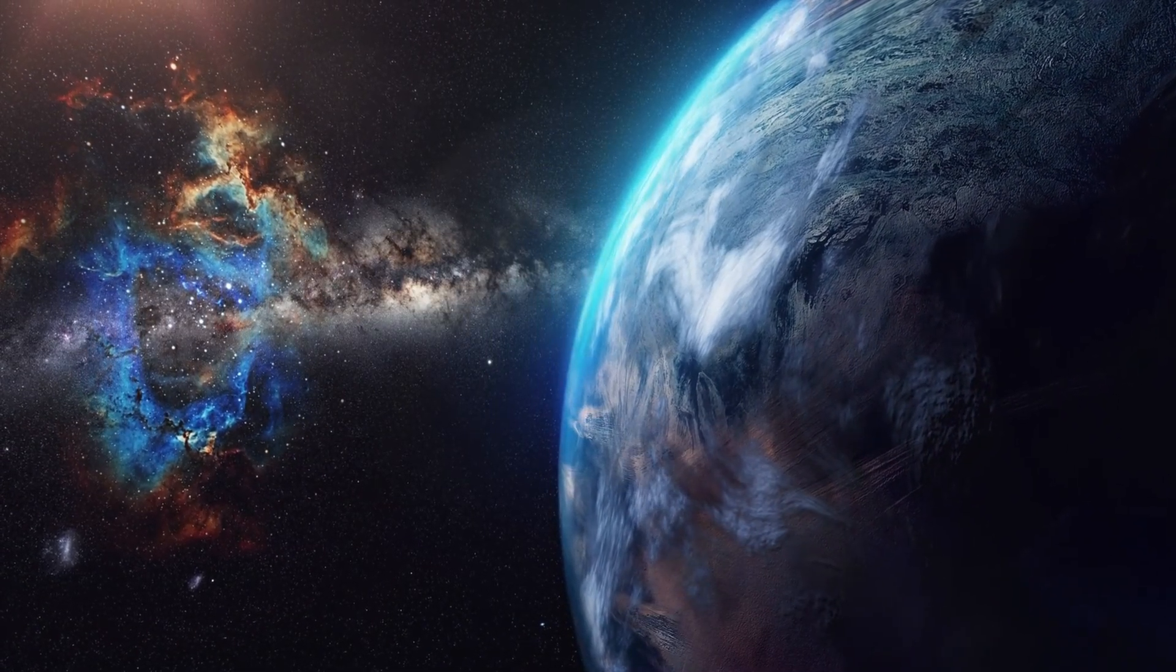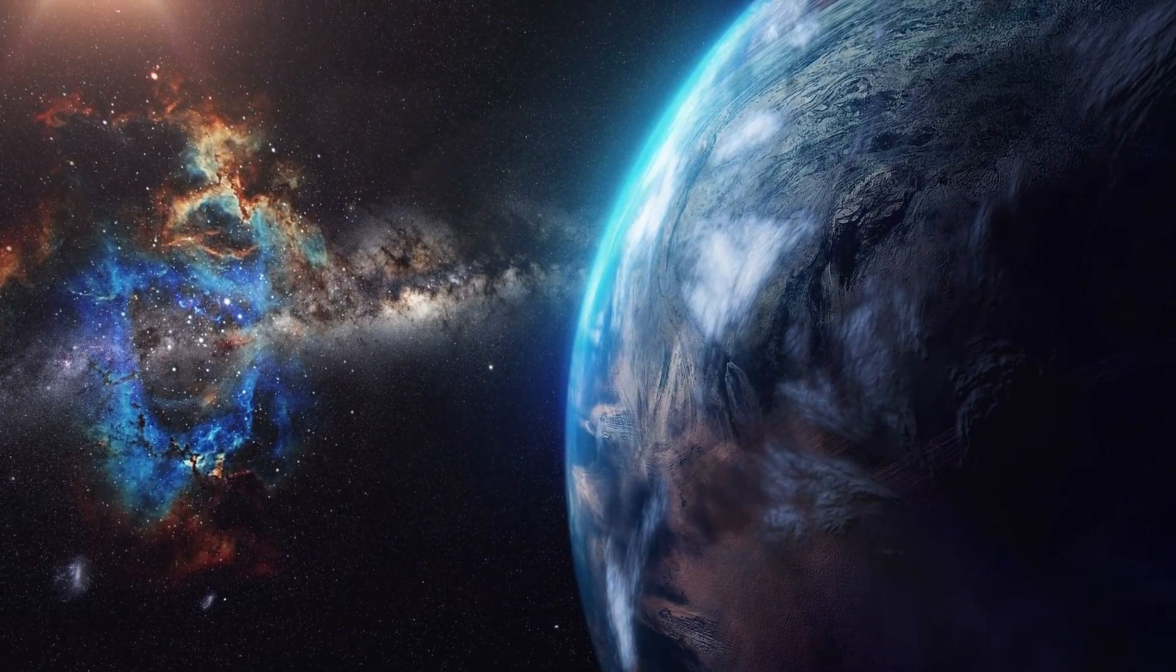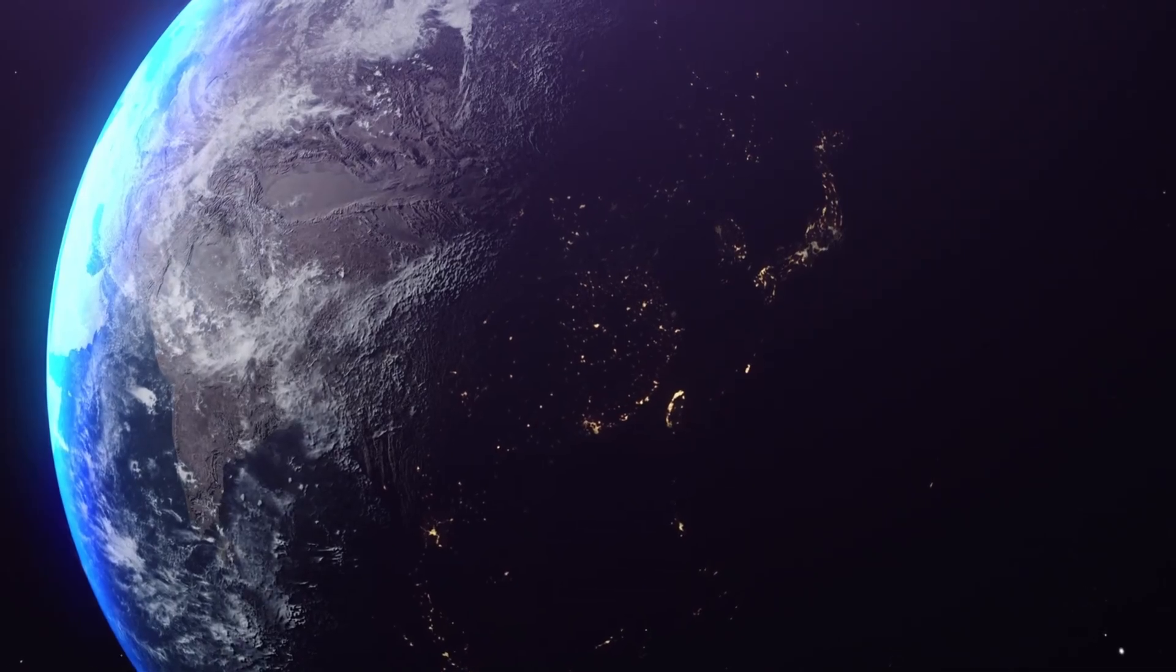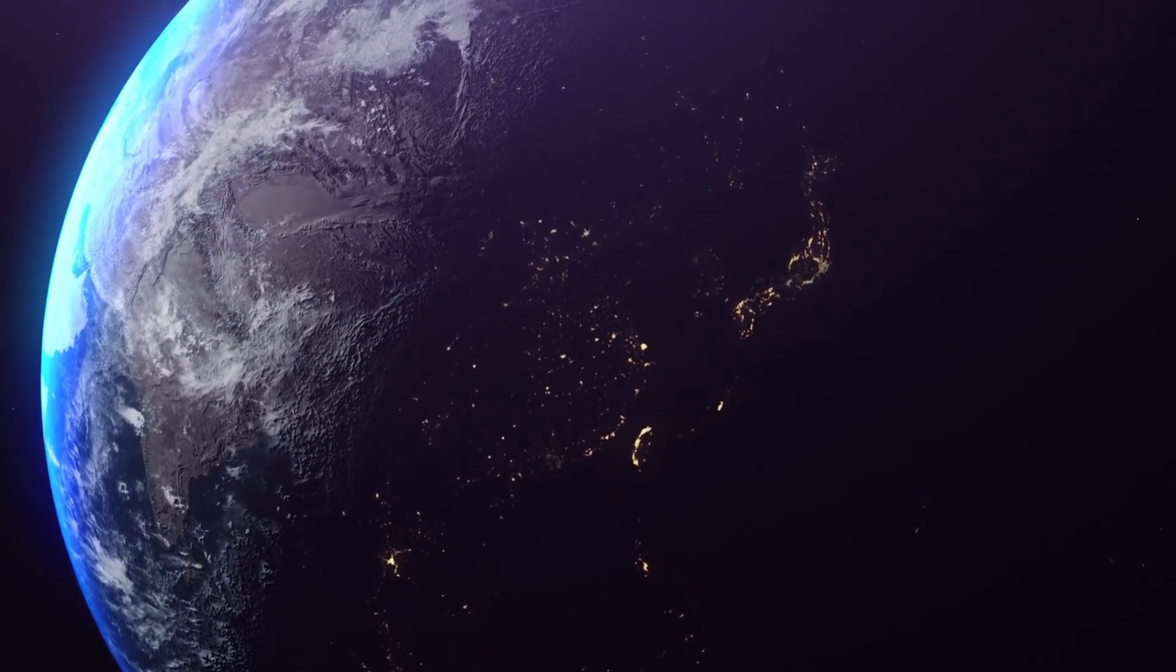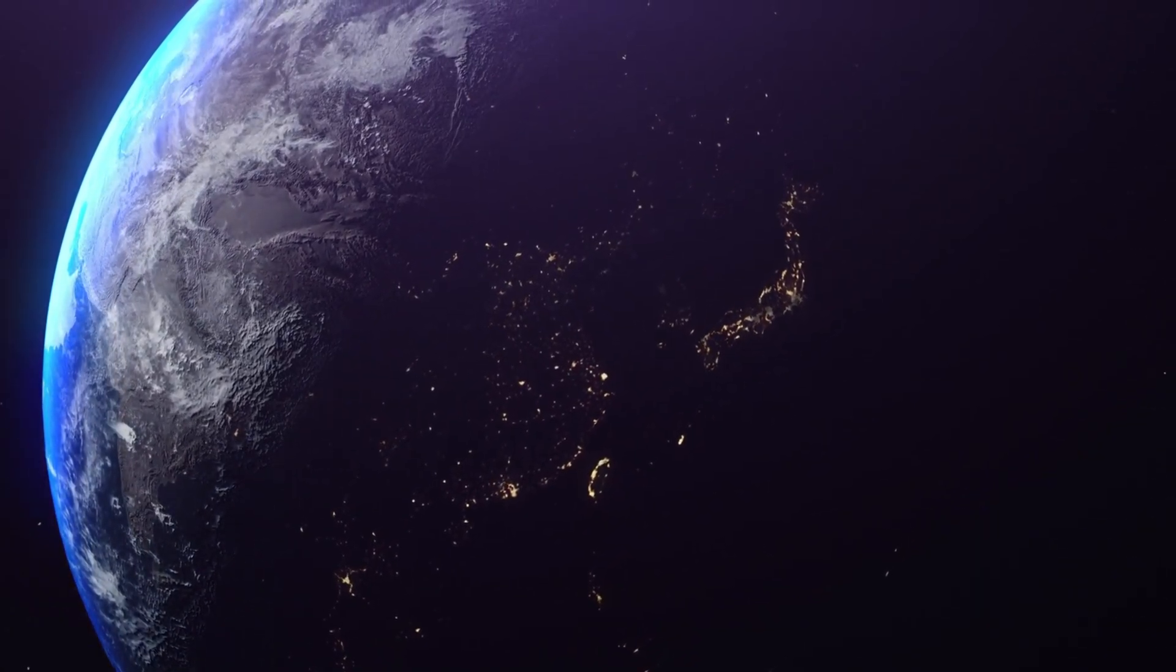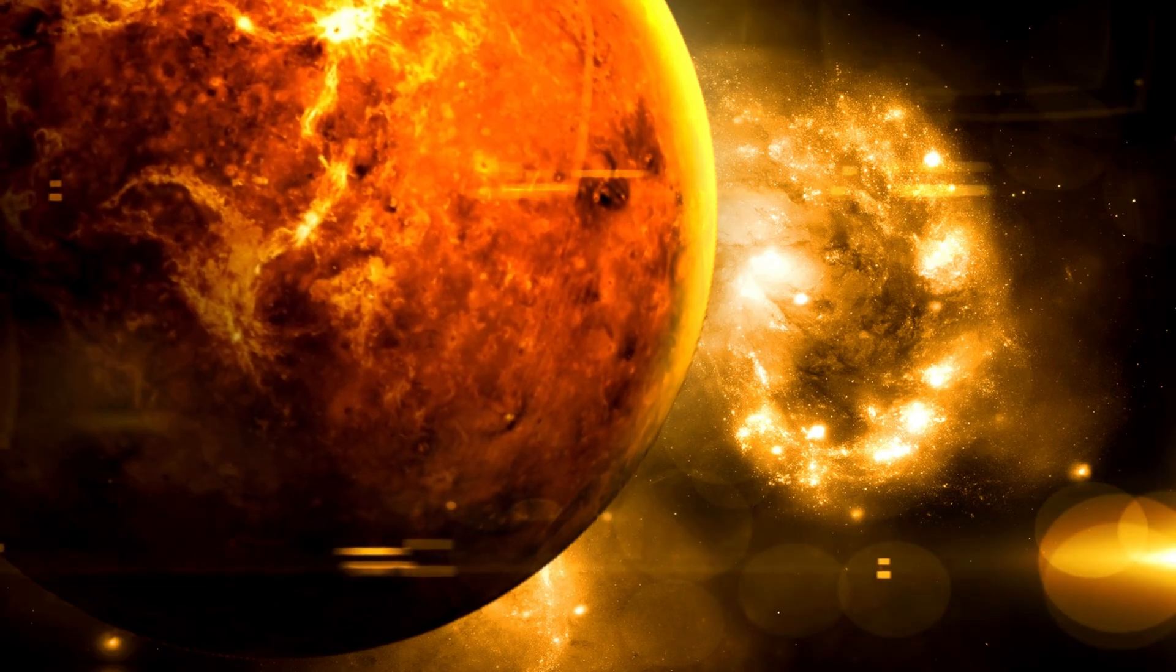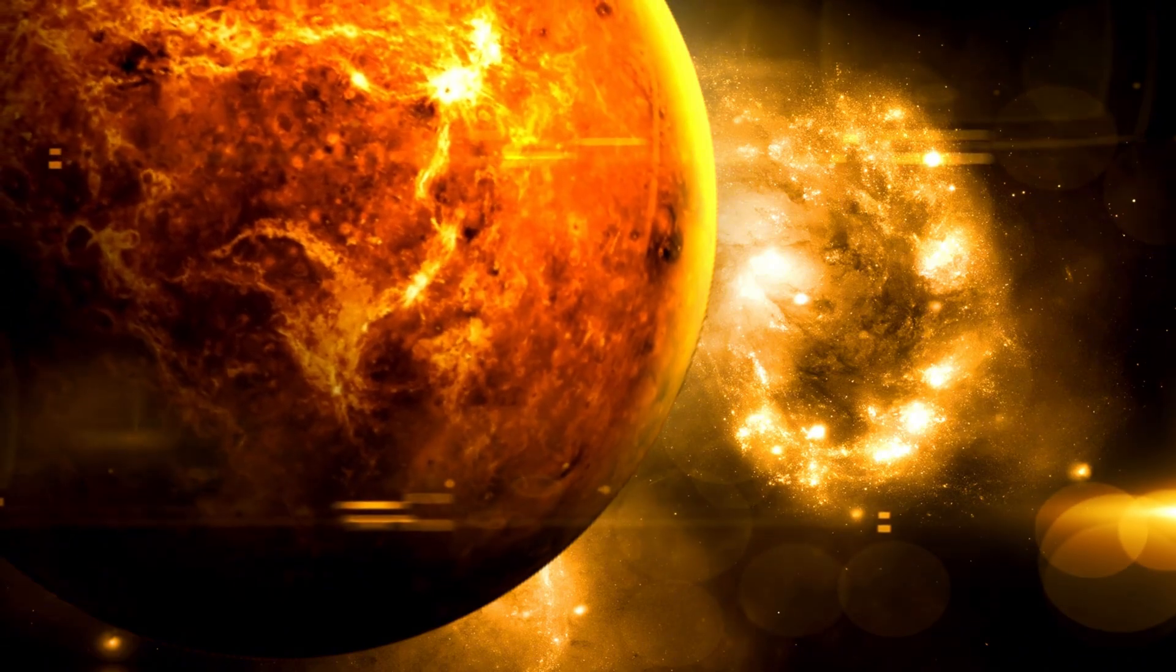Red dwarfs like Proxima Centauri are smaller, cooler, and much longer-lived than stars like our Sun. Their low luminosity makes them challenging to observe, but it also means that their habitable zones are much closer to the star. For Proxima, this translates to an orbital distance of just 0.05 astronomical units, a mere fraction of the distance between Earth and the Sun.